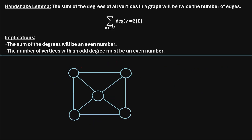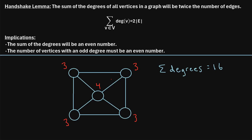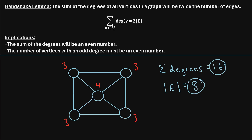Let's check out one more example. For each of the outer vertices, there are exactly three edges touching them, so they all have a degree of three. The center vertex has four edges touching it, so it has a degree of four. Adding up all the degrees — three plus three plus three plus three plus four — gives us 16. Counting the edges in this graph gives us eight total edges. The sum of the degrees (16) is twice the number of edges (eight), just as the handshake lemma predicted.